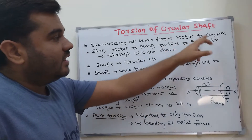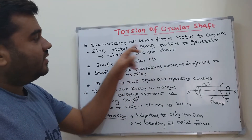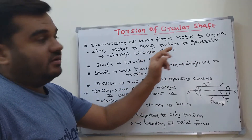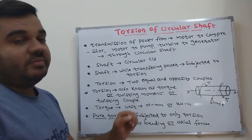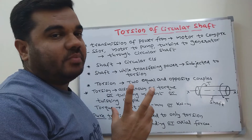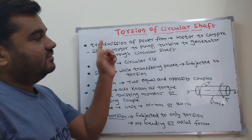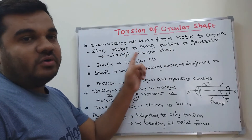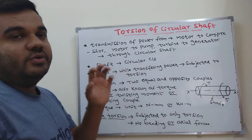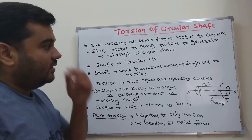If you want to run the compressor or the pump, you need a motor. If you want to transfer power from a turbine to a generator — turbines also create mechanical power — there is an intermediate component needed. In all these cases, to transfer mechanical power from one component to another, you need that intermediate component, which is known as a circular shaft.